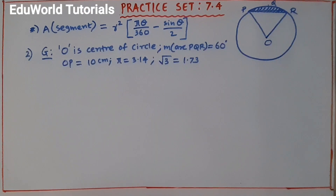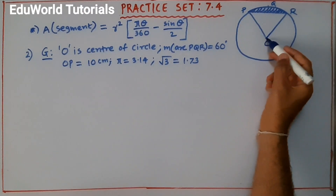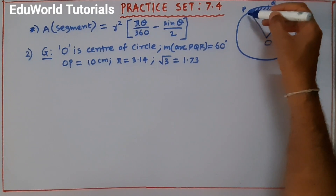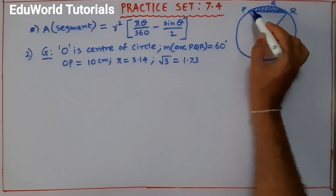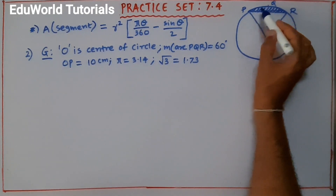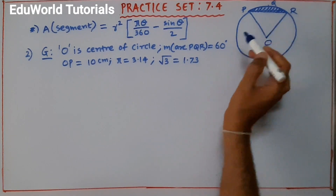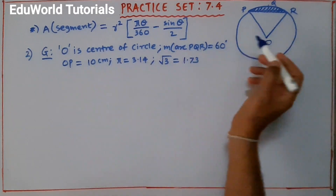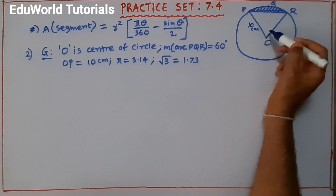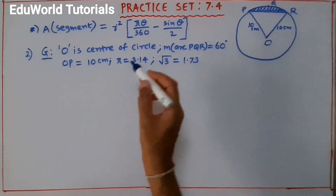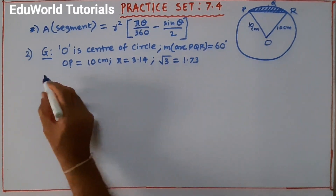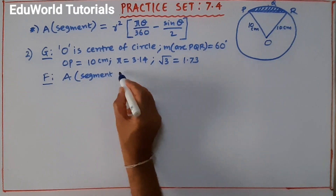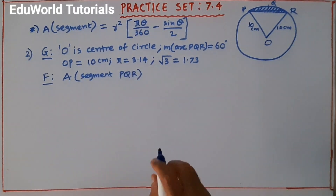Now we do the second sum. O is the center of the circle. The two radii OP and OR are formed by joining endpoints of arc PQR with the center. Drawing chord PR gives minor segment PQR. Measure of arc PQR = 60°, so theta = 60°. Radius OP = 10 cm. We take pi = 3.14 and √3 = 1.73. We have to find area of segment PQR.